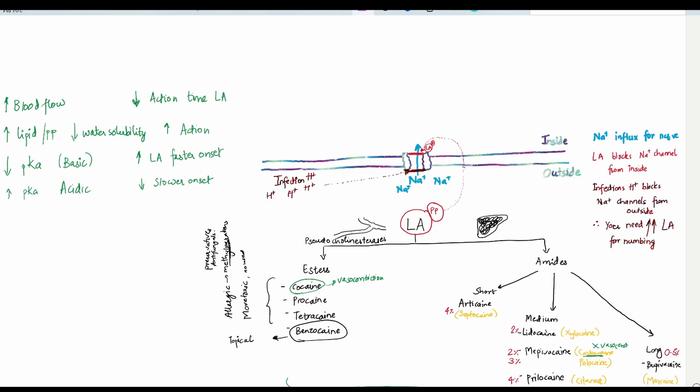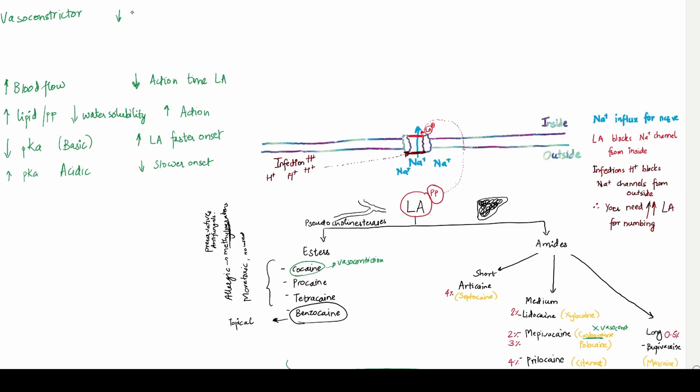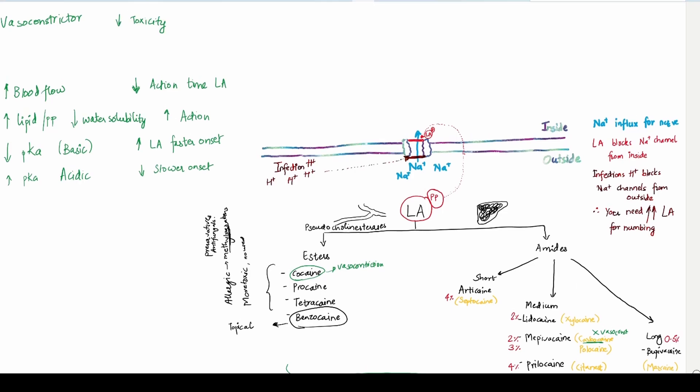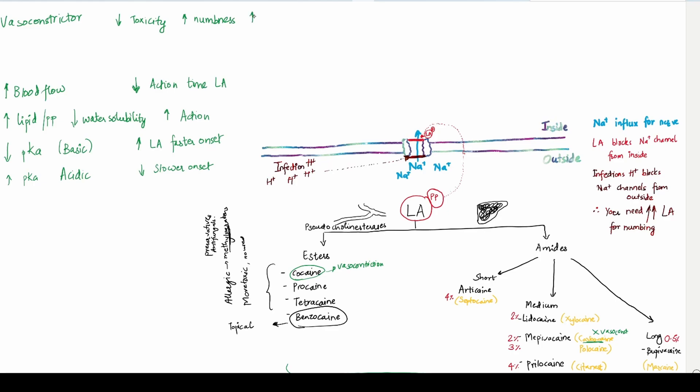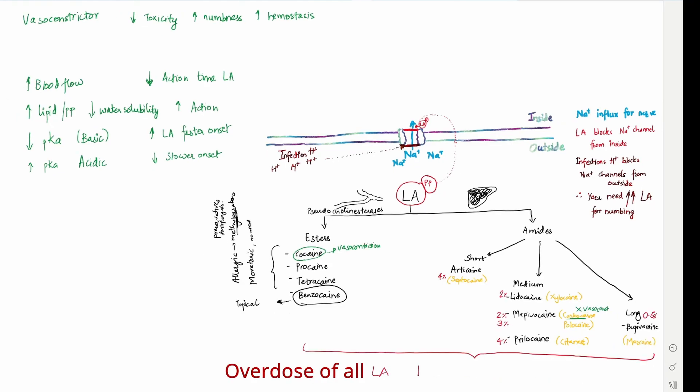What does the vasoconstrictor basically do? Vasoconstrictor will decrease the toxicity, then increase the numbness, and it will increase the hemostasis. As an effect, what does all of these LAs do to the body? All of the LA will cause vasodilation. And LA will cause decreased blood pressure and so it will cause a shock. Except for prilocaine, which in excess can cause methemoglobinemia, whereas everything will cause vasodilation.